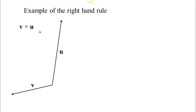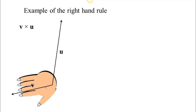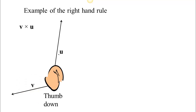Let's do another example — this time v cross u. Since the first vector is v, put your hand in the plane created by u and v along v. In order for your fingers to curl toward u, your thumb is going to have to go down. So we end up with thumb down, which means v cross u is going into the screen.